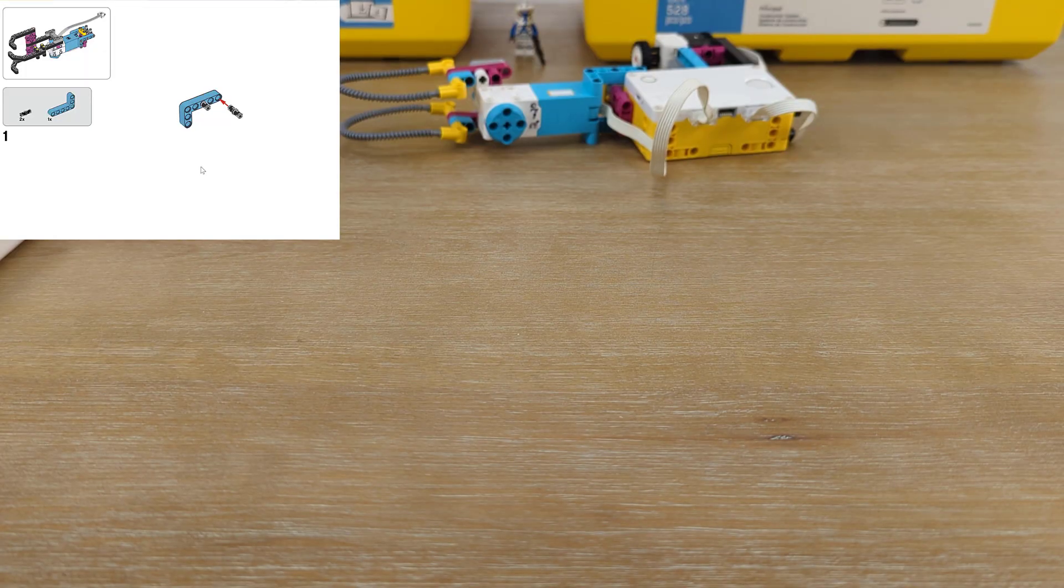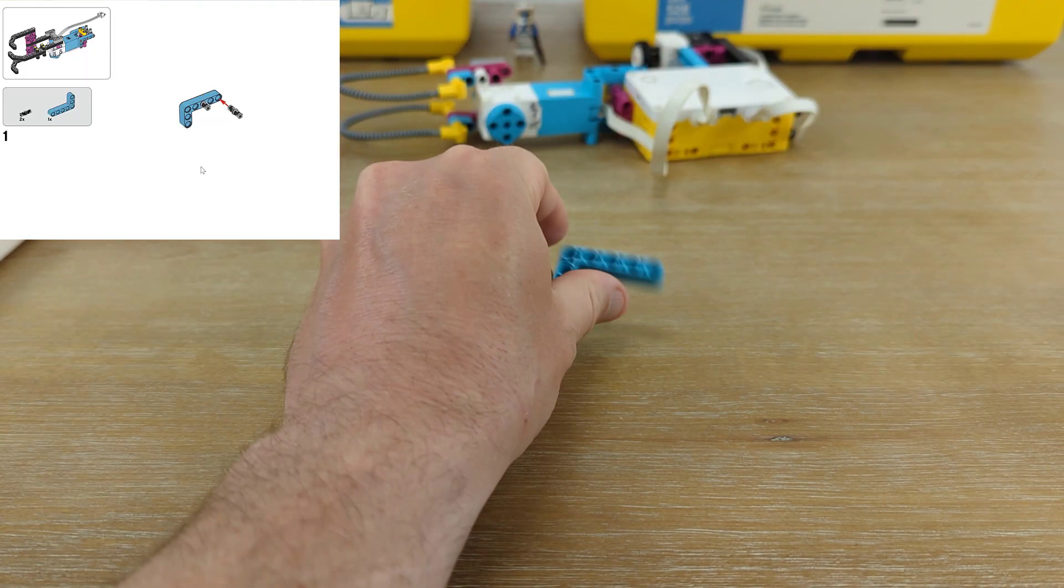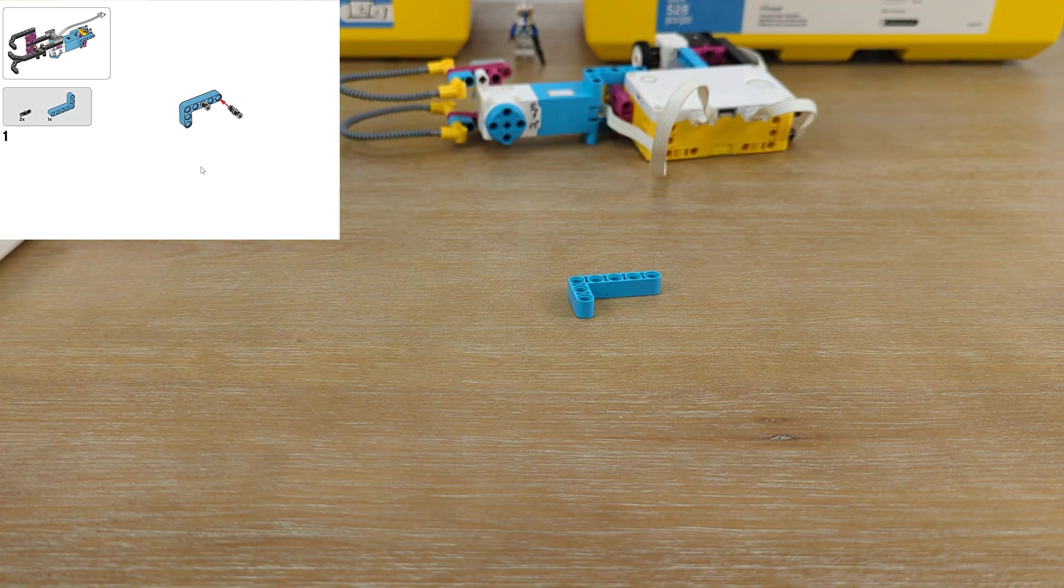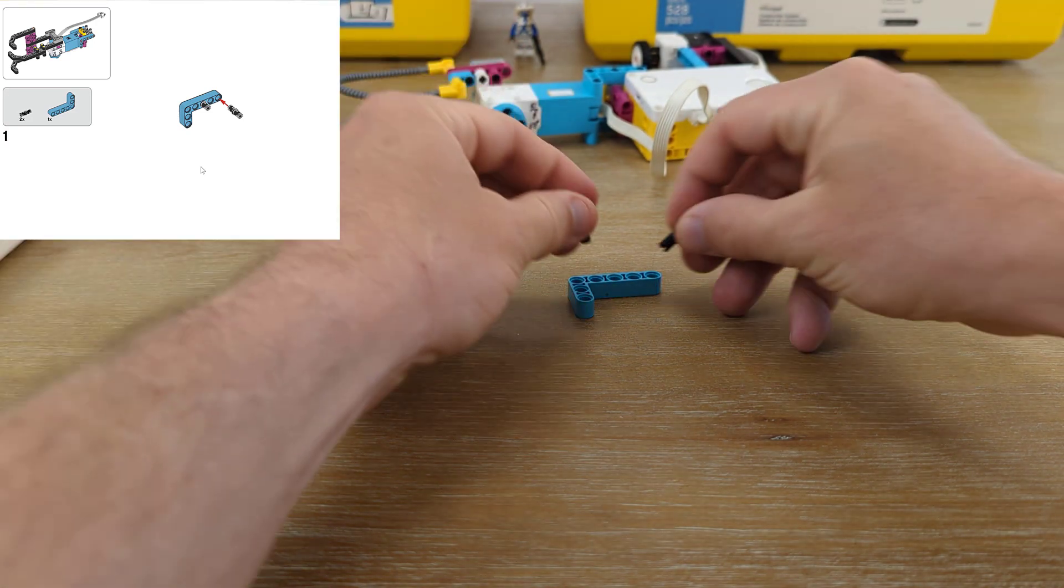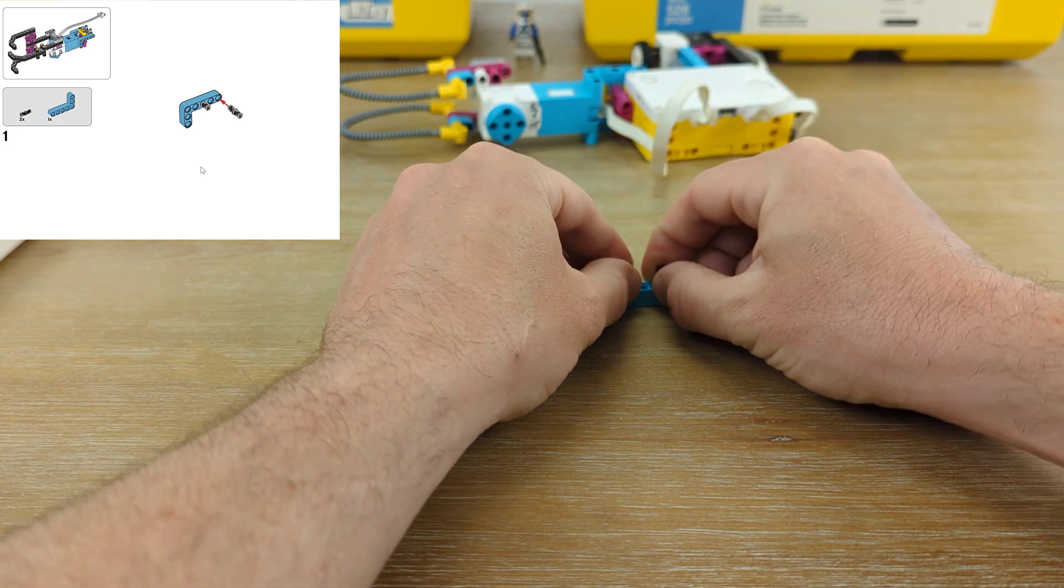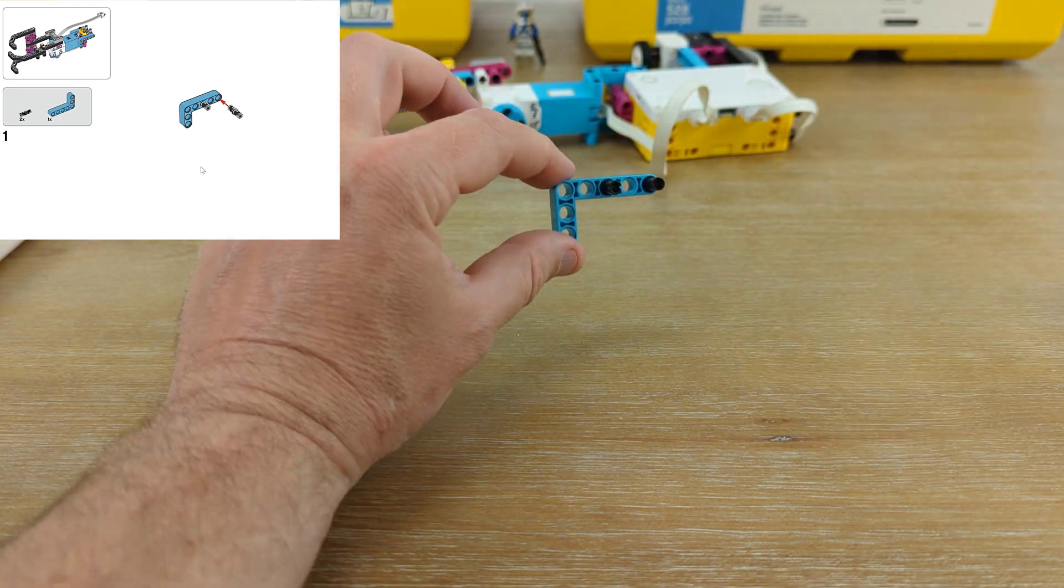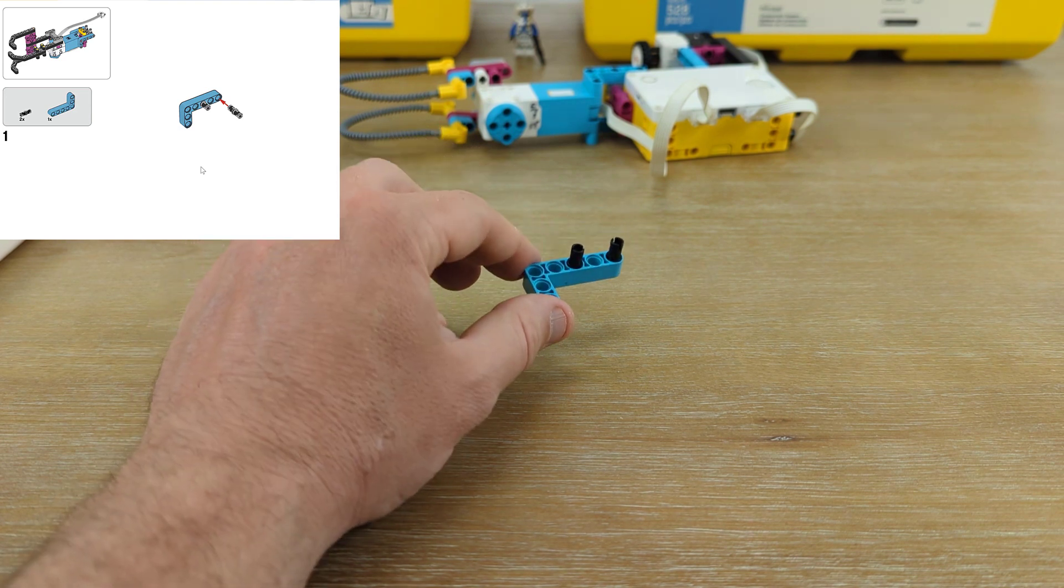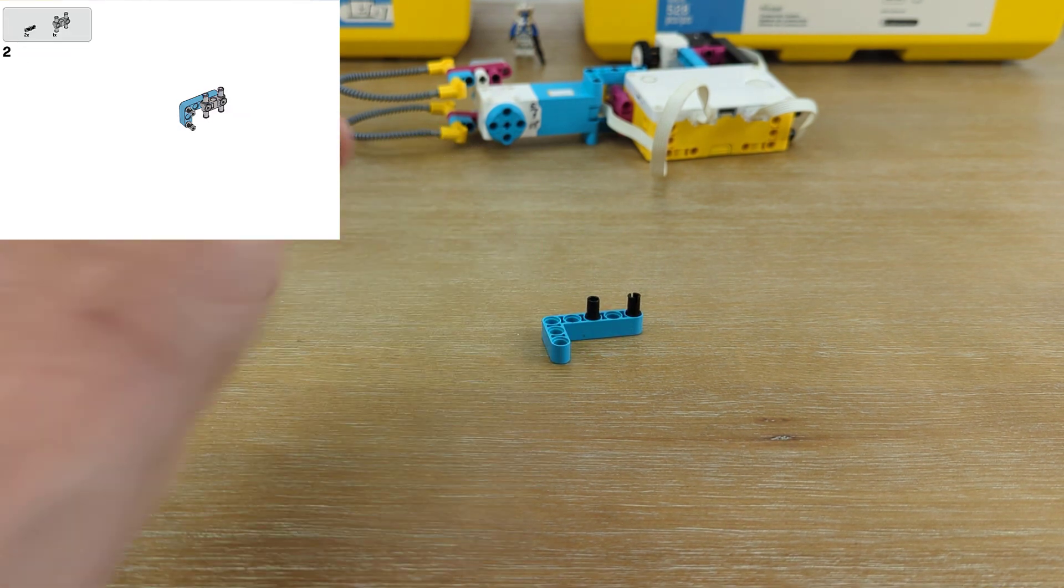Just like our previous build, we're going to lay everything out so that it matches the picture, and this one will start out like our other grabber in that we're building an attachment base so that our motor can be modular. Just like last time, I recommend tilting it up to make sure your build matches what you're seeing in your picture.